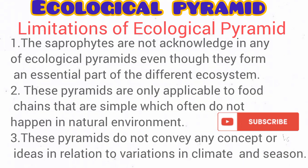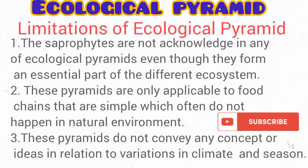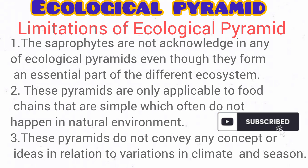What are the limitations of ecological pyramid? They actually do not capture or acknowledge saprotrophic effects, which form a basic part of all ecosystems. Ecological pyramids do not acknowledge the fact that a particular organism can occupy more than one trophic level. For example, omnivores can feed on both plants — the producer, acting as primary consumer — and can also feed on flesh, acting as carnivores. Lastly, ecological pyramids do not convey any concept regarding the acknowledgement of climate or environmental factors influencing feeding patterns in an ecosystem.